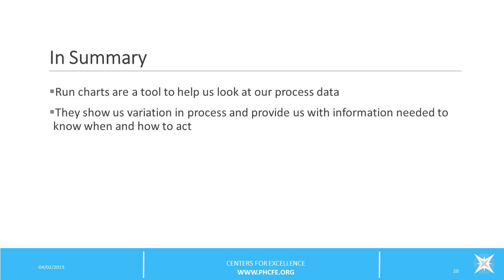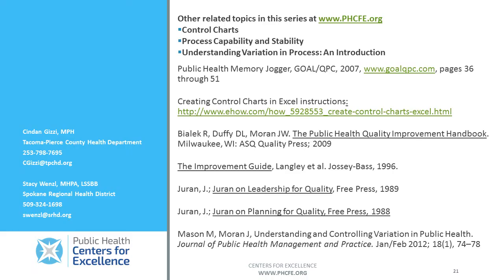In summary, run charts are a tool to help us look at our process data. They show us variation in our public health processes and can provide valuable information needed to know when and how to act. This was a brief tutorial on run charts. I would encourage you to take a look at other related topics in this series, including use of control charts, understanding variation in process, and process stability and capability.